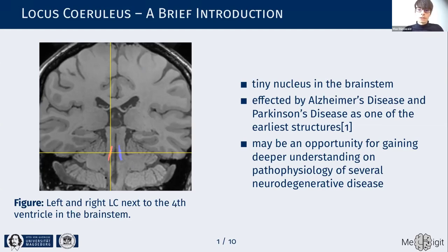It has been shown that this tiny structure is one of the earliest — if not the earliest — affected by several neurodegenerative diseases such as Alzheimer's and Parkinson's disease. And because we can measure it using MRI, this may present a unique opportunity to gain a deeper understanding of the pathophysiology of these neurodegenerative diseases.